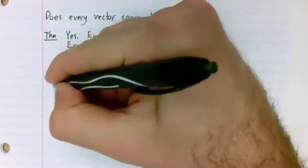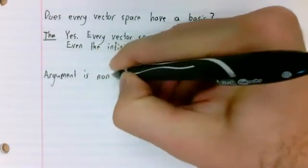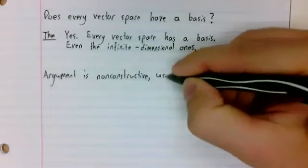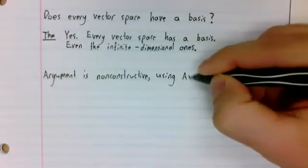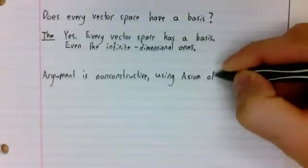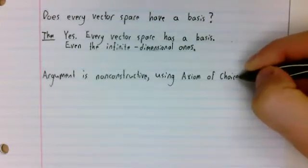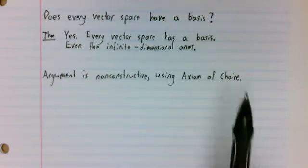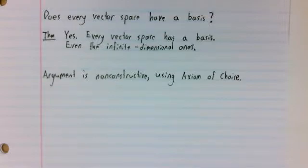What gave people trouble was that the argument is non-constructive, using something called the axiom of choice. We're not going to go into a bunch of set theory here. But the axiom of choice is one of the ZFC axioms, the now standard axiom system for set theory.